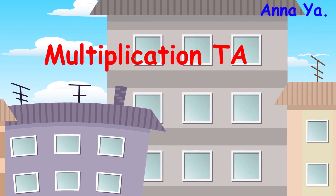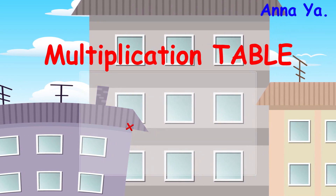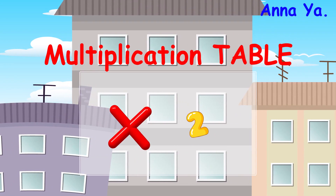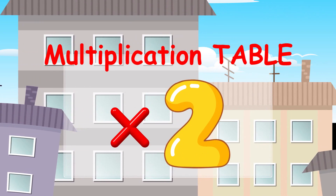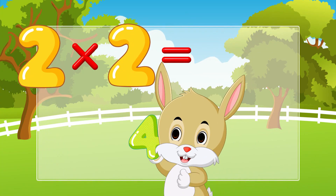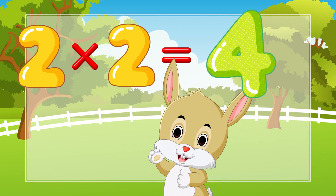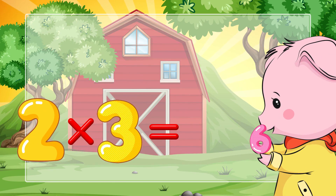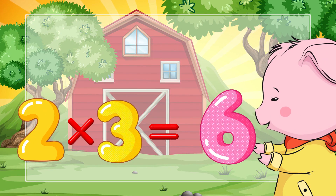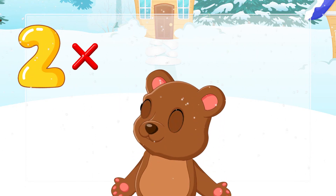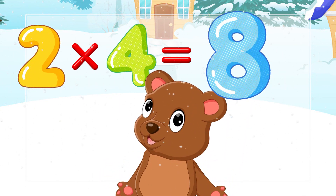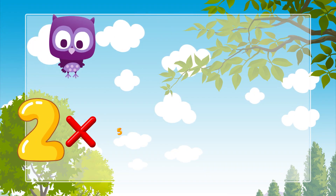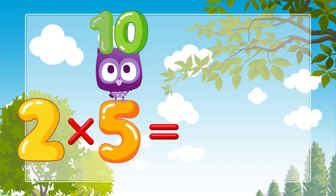Two times table. Two times two is four, two times three is six, two times four is eight, two times five is ten.